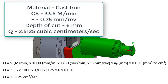To calculate the volume material removal, first multiply the cutting speed in meters per minute times 1,000 to convert to millimeters per minute, then multiply by 1 over 60 to get millimeters per second.